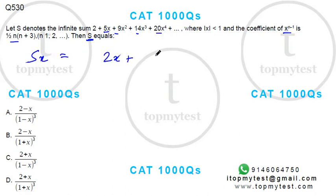I'll get 2x plus 5x squared plus 9x cubed plus 14x to the power 4 plus 20x to the power 5 plus so on to infinity.